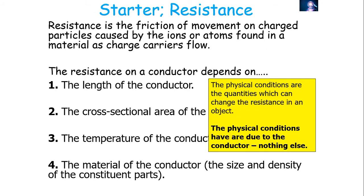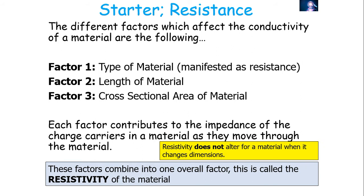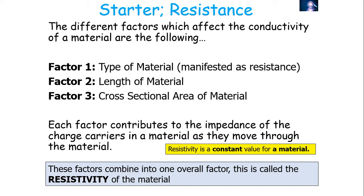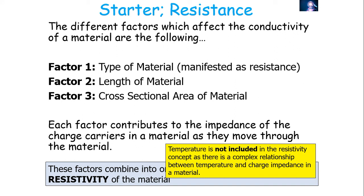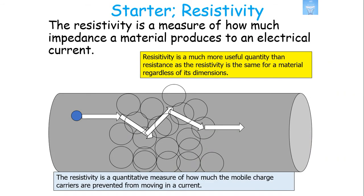We can combine three physical conditions — length, cross-sectional area, and material — into one overall factor called resistivity. Resistivity does not alter for a material when it changes dimensions; it is a constant value for a given material. Resistivity is defined as the resistance of a one-metre length with a one-metre-squared cross-sectional area, measured in ohm-metres. It is more useful than resistance because it is the same for a material regardless of its dimensions, whereas resistance can vary depending on length and cross-sectional area.